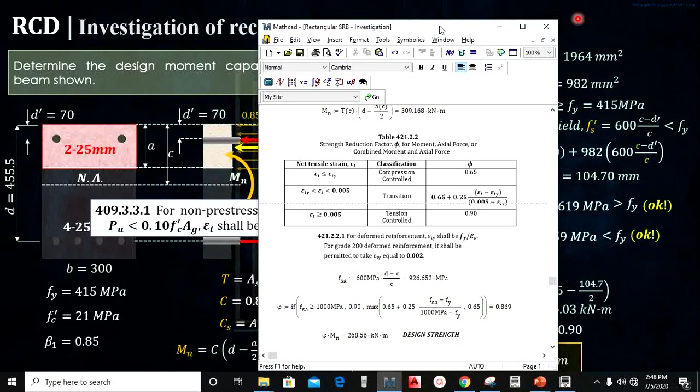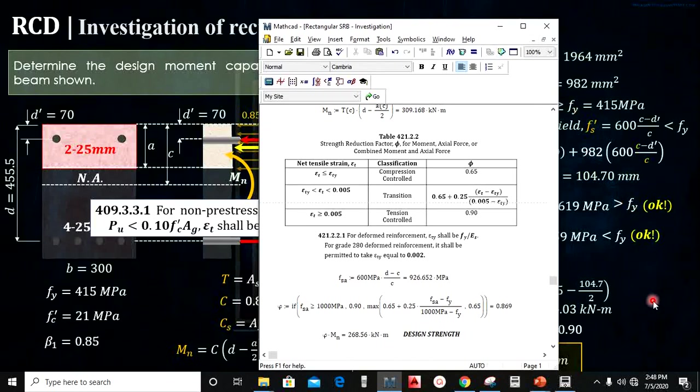So ito lang yun. It's one of the main reason na hindi talaga natin i-disregard yung compression bar using NSCP 2015 na mismo. Where in 2001, romax man yung basis natin using doubly reinforced. I hope that is clear.